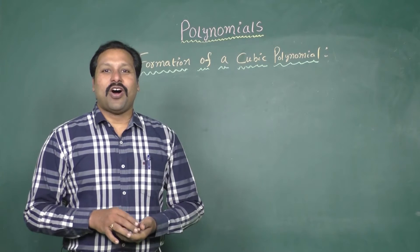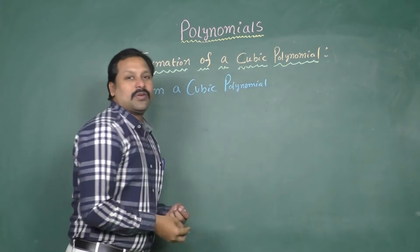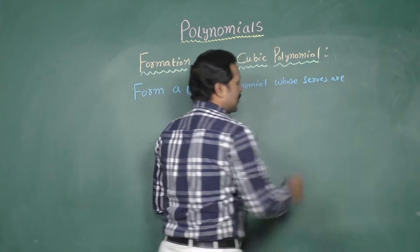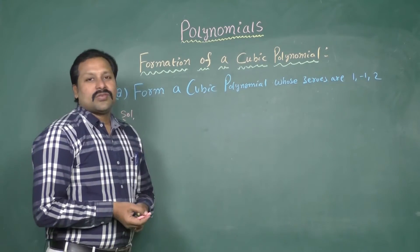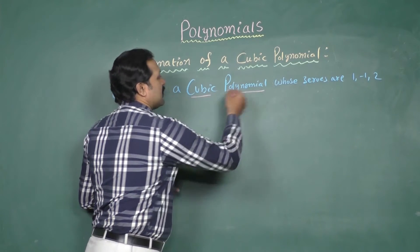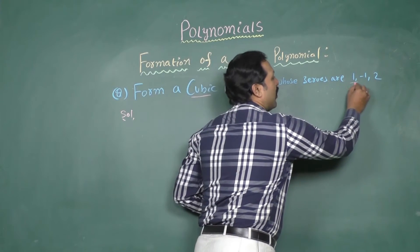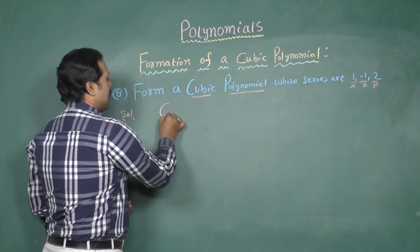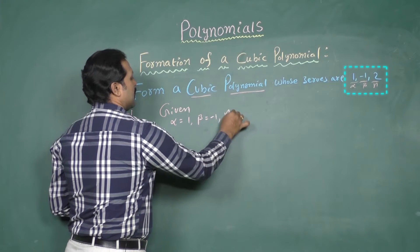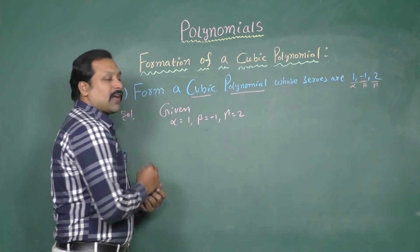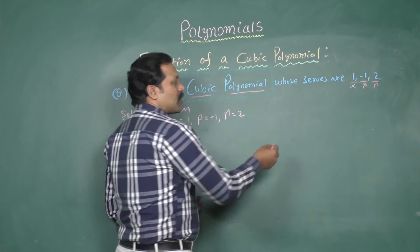The question is: form a cubic polynomial whose zeros are 1, minus 1, and 2. We should find out the cubic polynomial. The given roots or zeros of the polynomial are alpha, beta, gamma. Given: alpha equal to 1, beta equal to minus 1, gamma equal to 2.